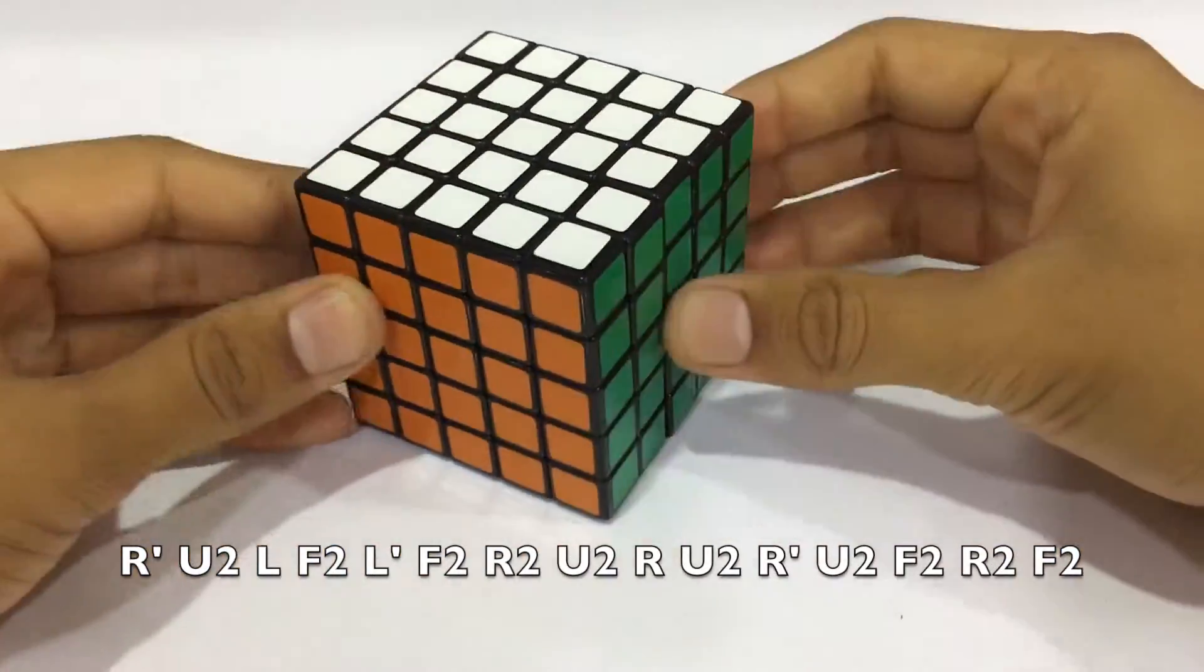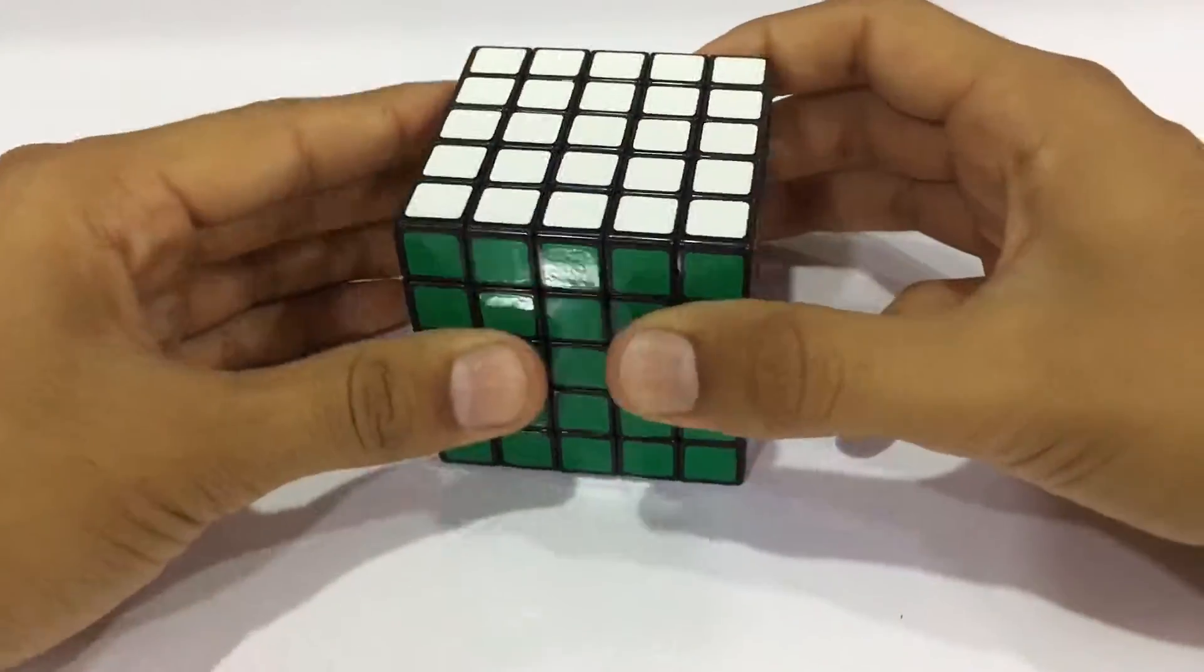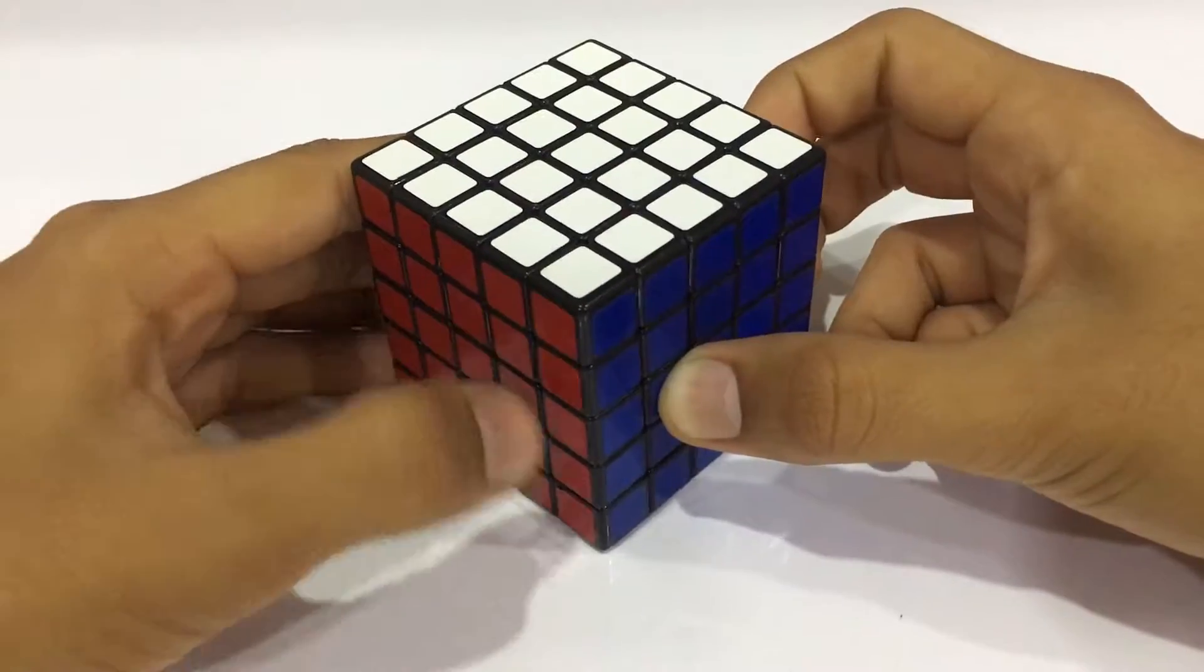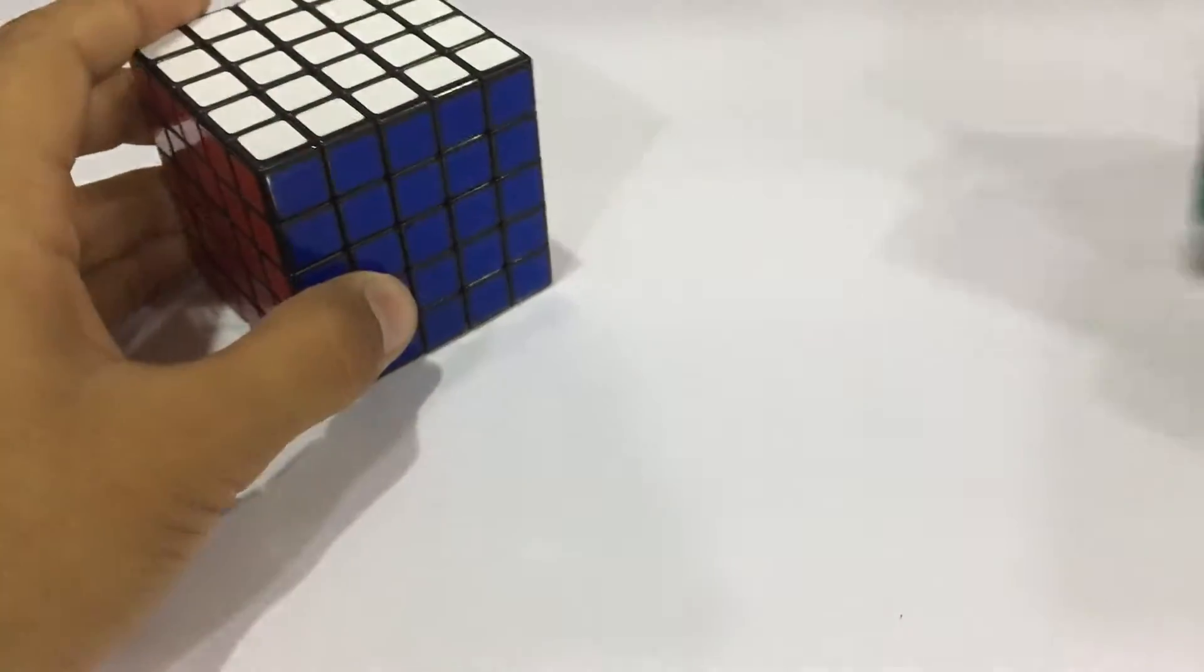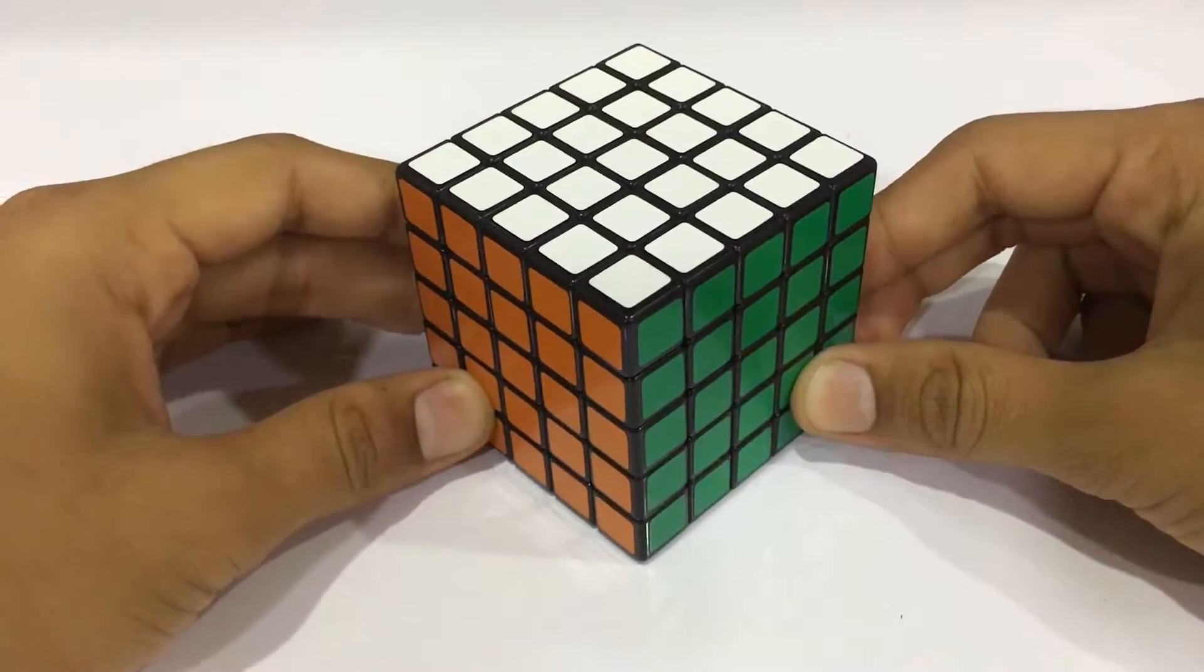So I know that I went a bit fast in this, but this is very easy to understand. If you have already understood the edge parity, how we do in the 4x4, then it's gonna be really easy for you to solve the edge parity in the 5x5.